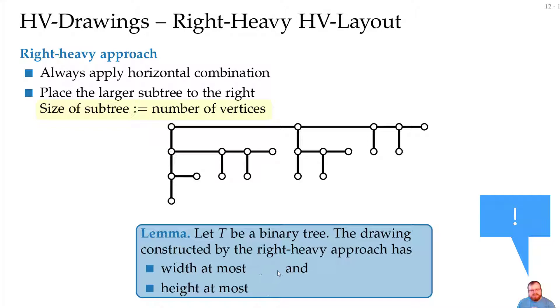For the width, it can be pretty terrible. Since we always put the large subtree to the right, if the whole tree is just a path, we will always put the child to the right and then the width will be exactly n minus one. But what about the height? We want to analyze how long is the path from here to here?